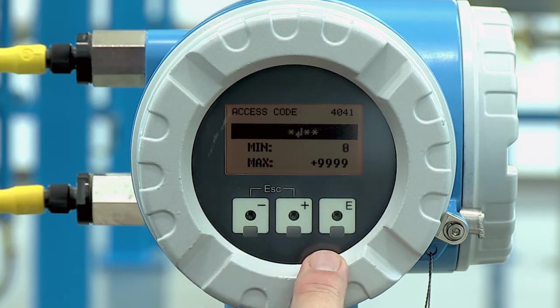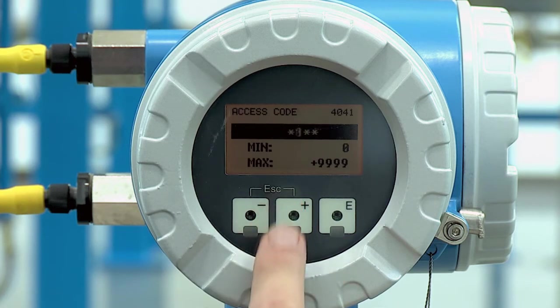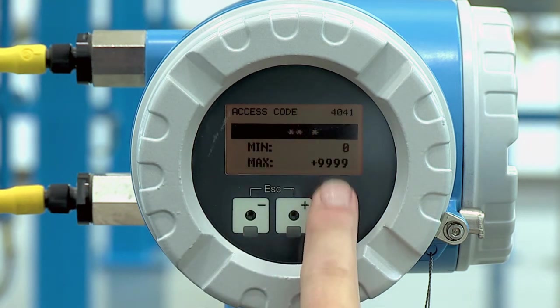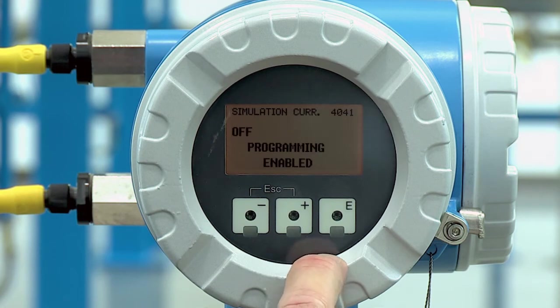Eight three, since it's a Promas 83 Coriolis meter. Now we can just hit the return and our programming's enabled.